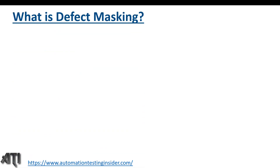Hello friends, welcome back to another video of Automation Test Insider. Today I'm going to talk about an important topic: defect masking. What is defect masking in software testing, or what do you mean by mask defect? A mask defect is commonly known as a defect that hides another defect in the application.